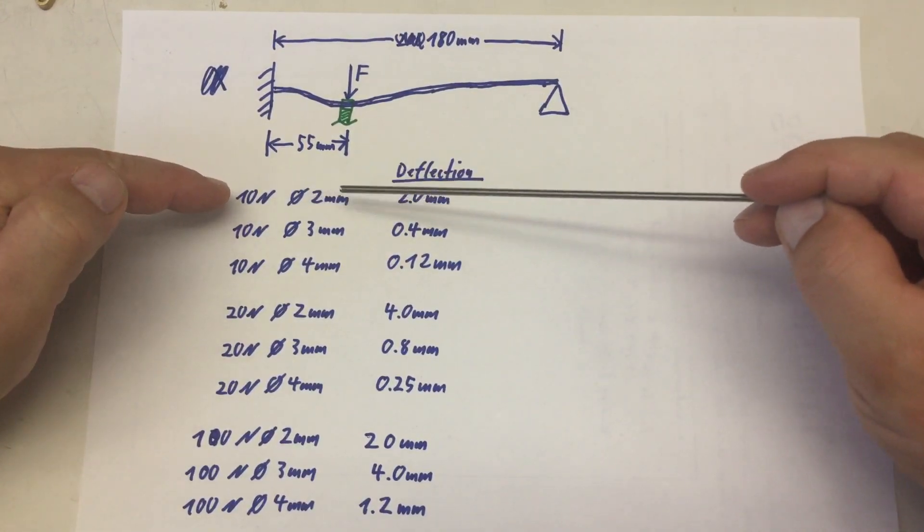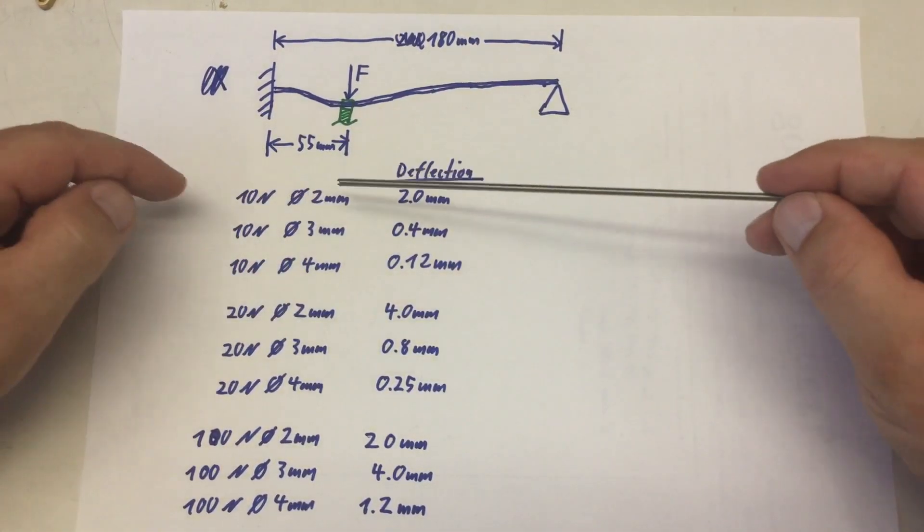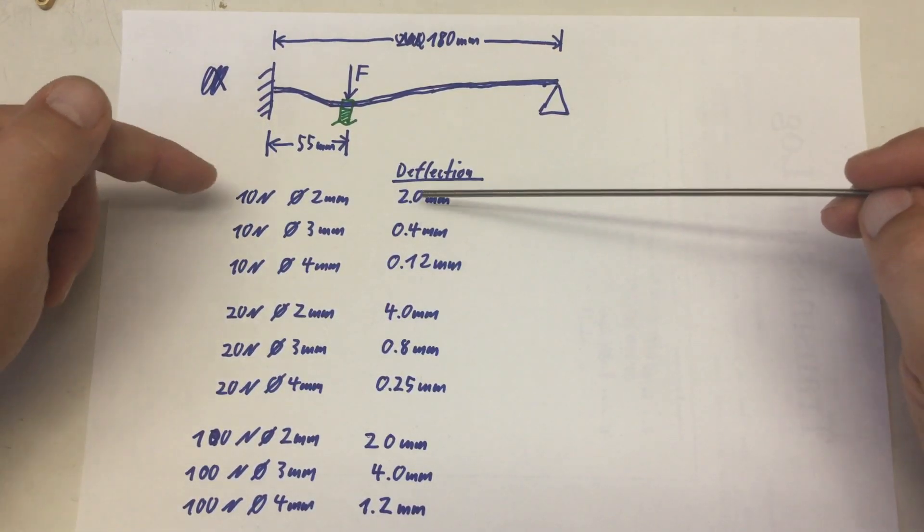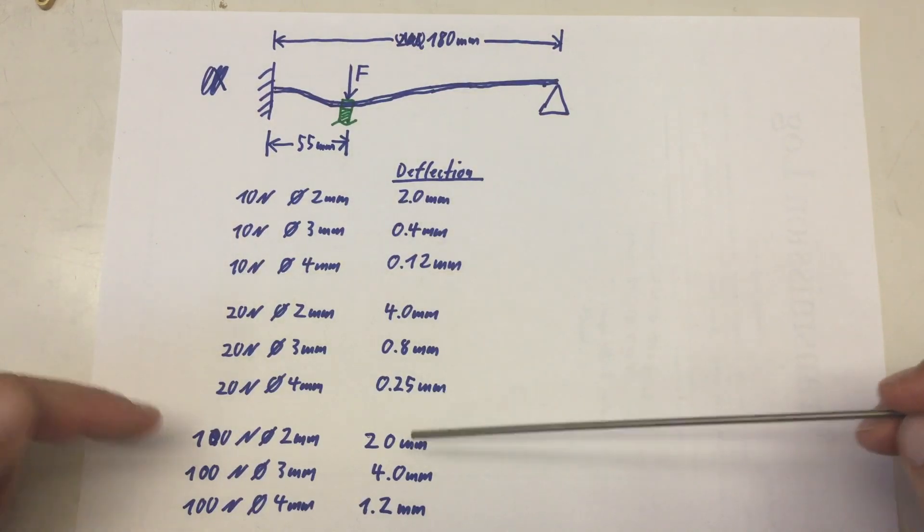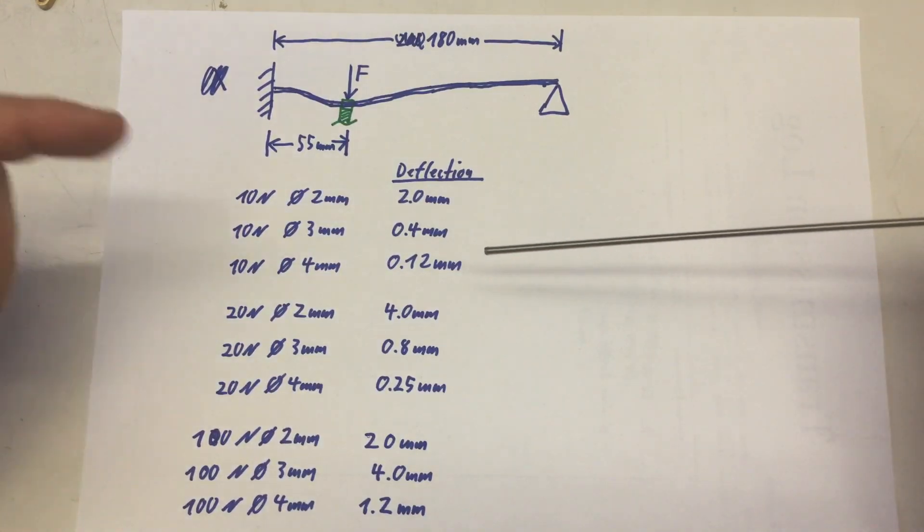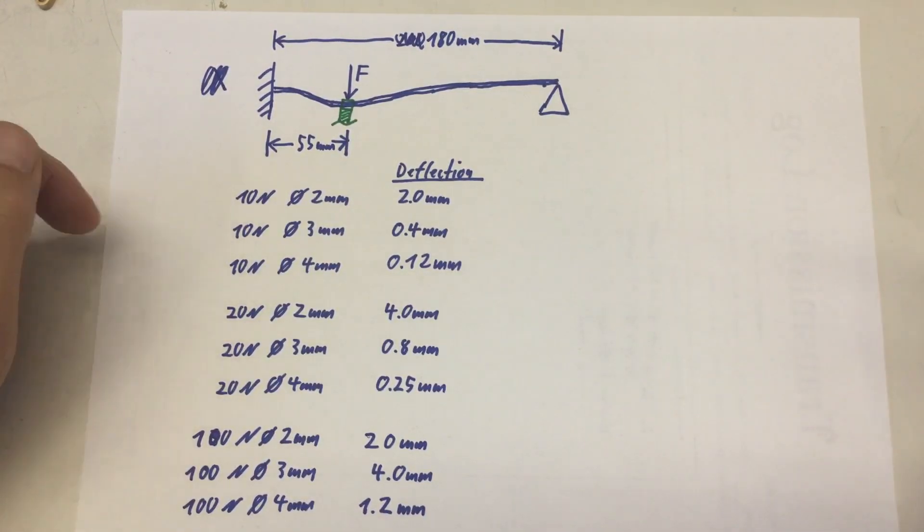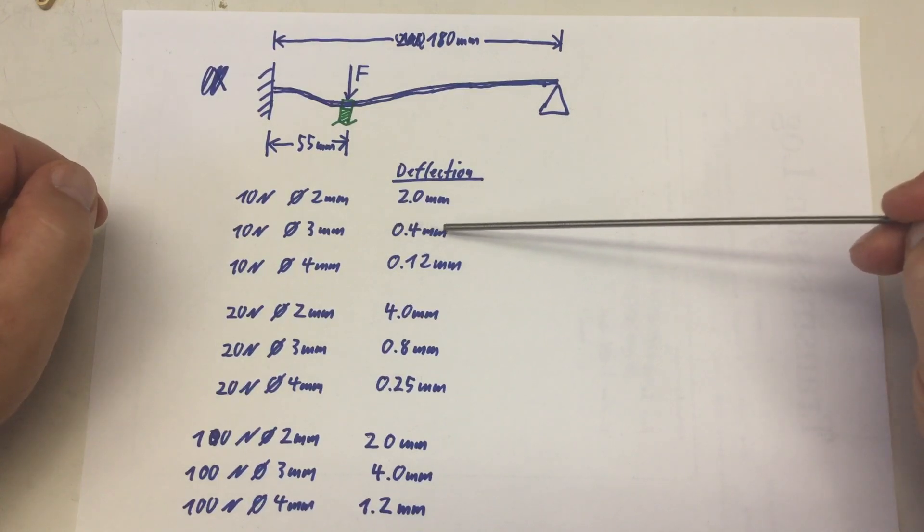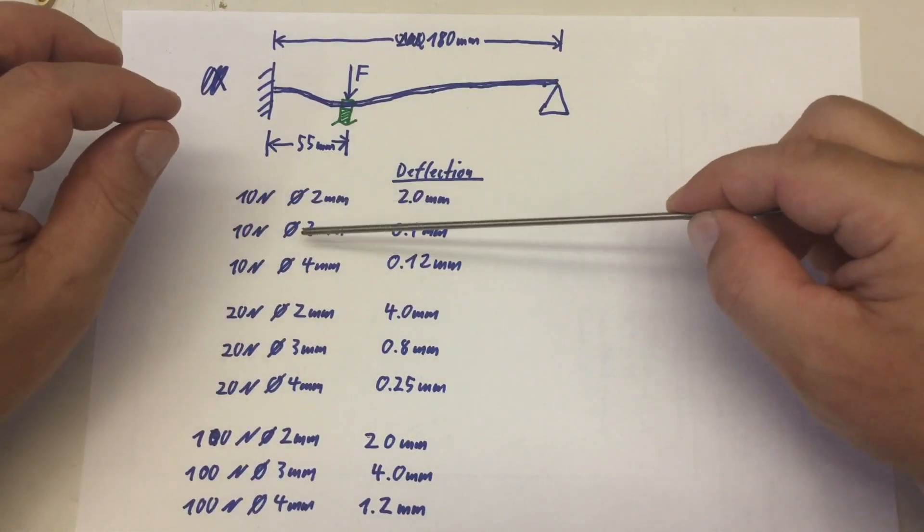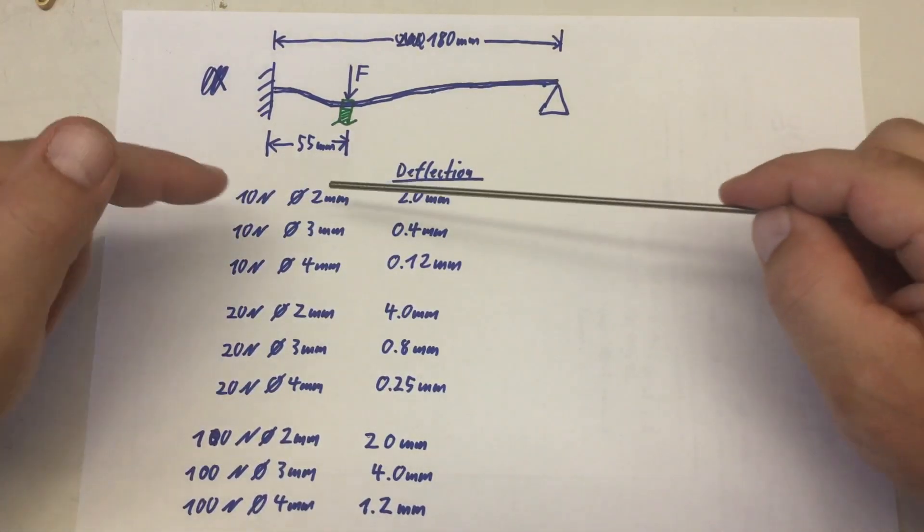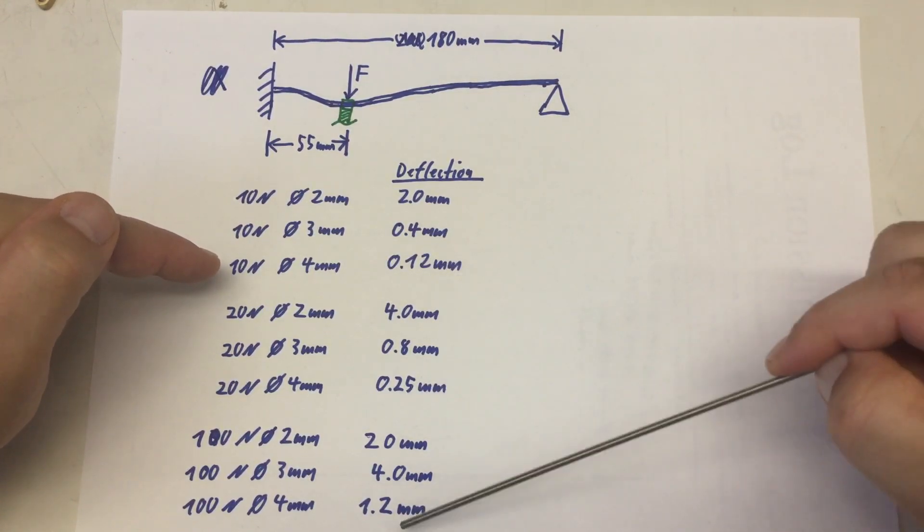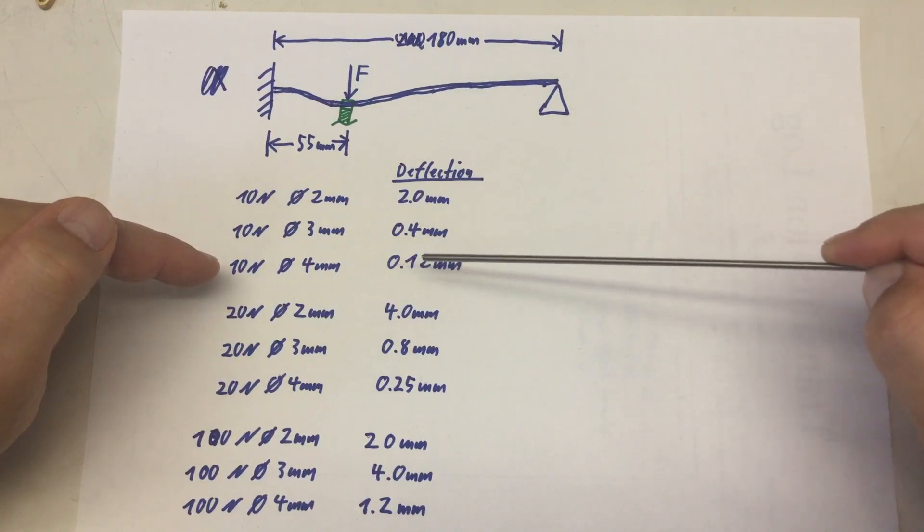And for different diameters of a round beam because my axle is round and different forces I got those numbers here. So basically for a two millimeter rod beam at 10 newtons it's two millimeters deflection. And if you look at the table this is quite linear. So basically per kilogram two millimeters deflection. For a three millimeter rod per kilogram 0.4 millimeter deflection.